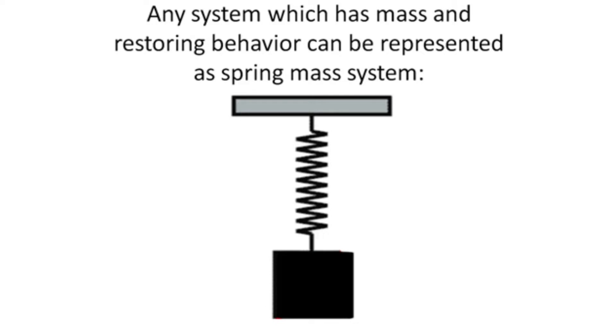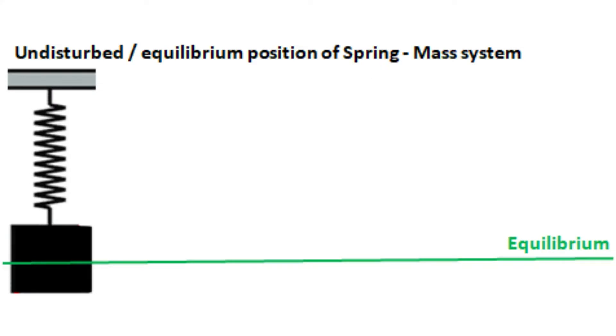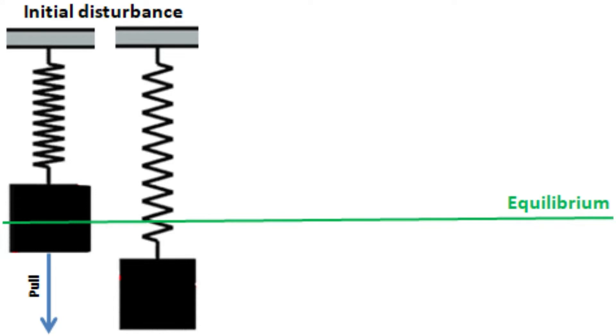Now we will try to understand the physical mechanism behind generating oscillatory behavior of the vibrating object using this spring-mass system. The present state represents the initial undisturbed position of the blade. Just like in the case of the blade experiment, we will now disturb the system by giving a small initial pull as shown here.